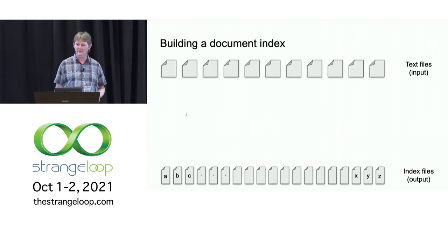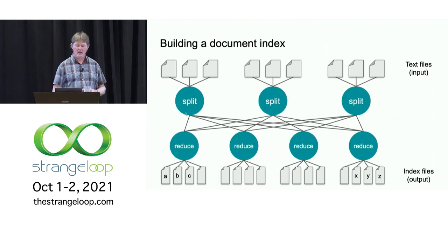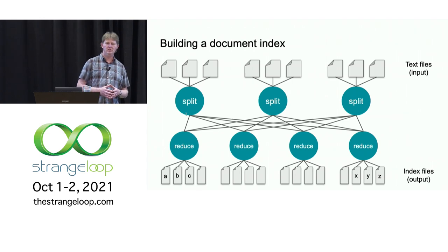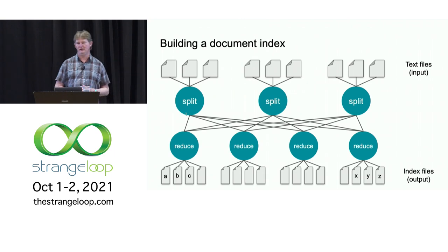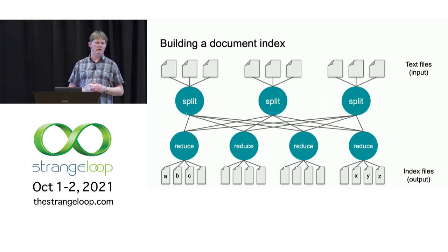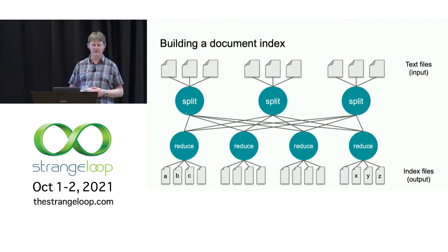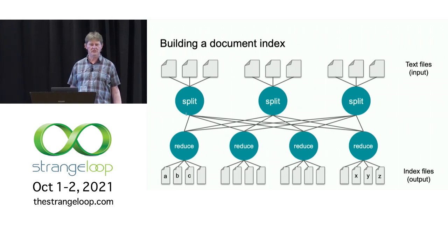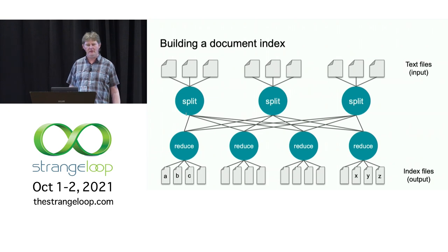This is a classic distributed systems problem. The distributed system that you want to build in order to do this efficiently is going to look something like this. You want multiple workers that are each taking a set of documents, splitting them up into words, shuffling the words so that all occurrences of the words beginning with A go to the same reducer, and all the words that begin with P go to another reducer. And then those reducers are going to write out the sorted index files.